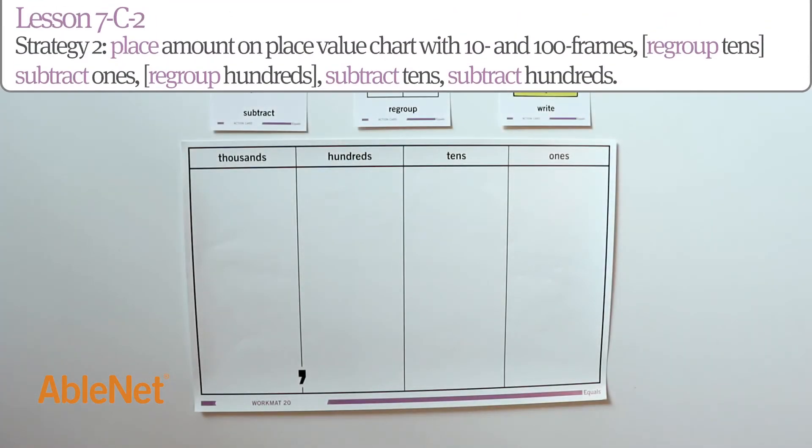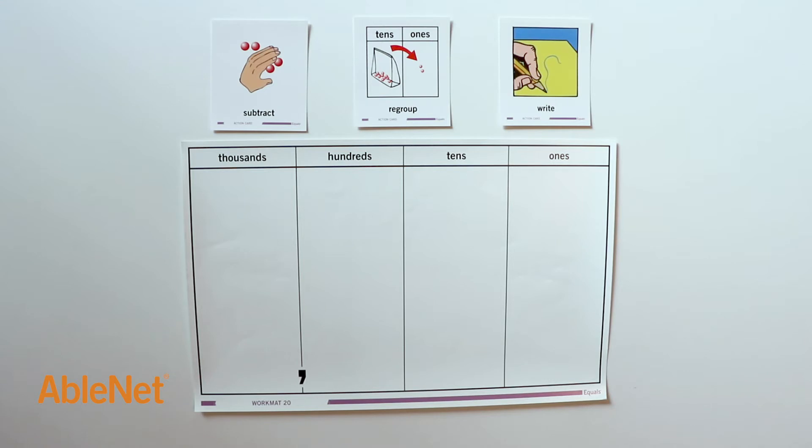For our second strategy, we're going to place the amount on the place value chart with 10 and 100 frames. Regroup tens, then subtract ones. Regroup hundreds, then subtract tens and hundreds.